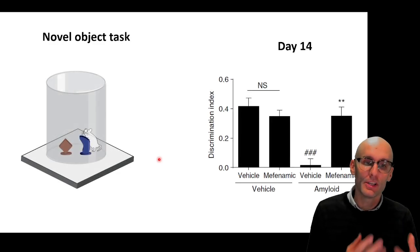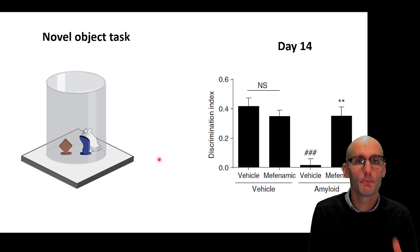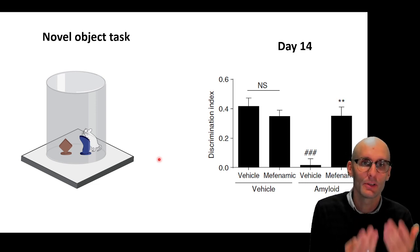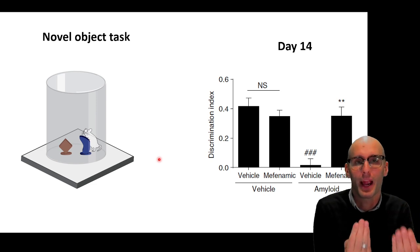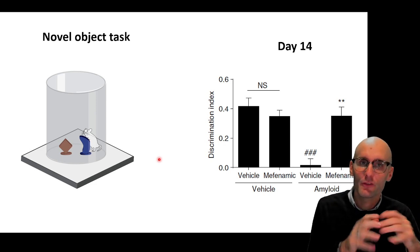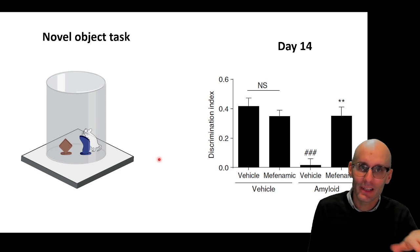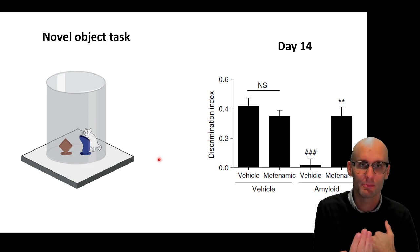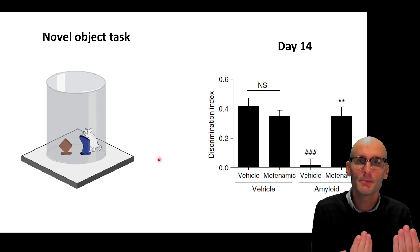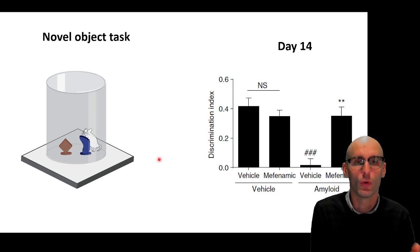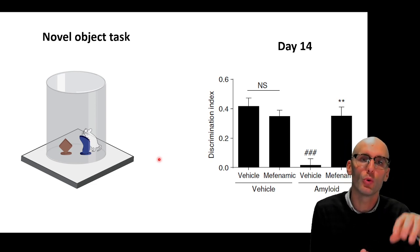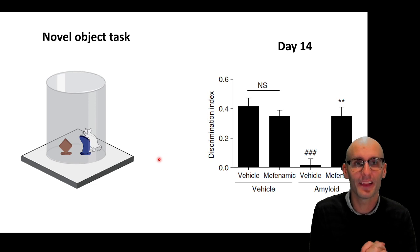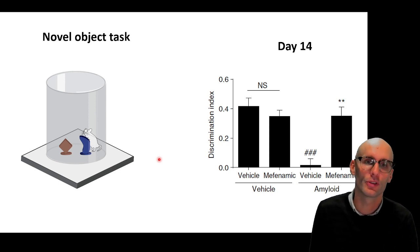Then we measured their memory deficits using the novel object task. So just a quick refresher is you put a mouse or a rat in an arena with two identical objects. So two brown squares, for example. And then after a period of time, you take the animal out, you clean the arena, but you swap out one of the objects. So now there's a new object and an object that's already seen before. You pop the rodent back in, and it should spend more time around the new object. And that's because rodents like new things. They should remember that they've seen the brown square and spend more time with the blue squiggle.